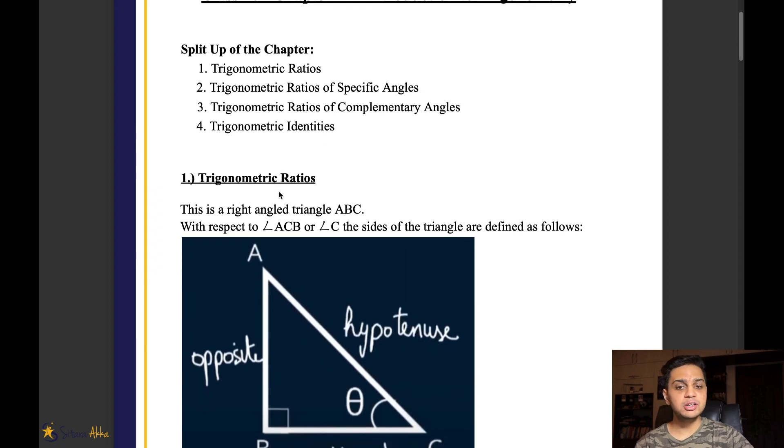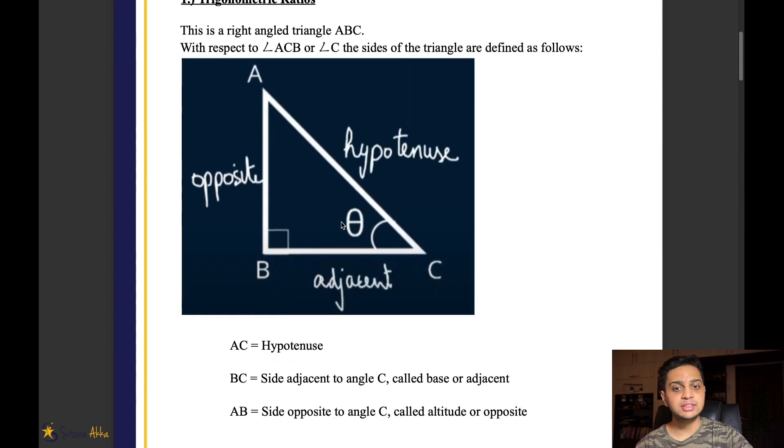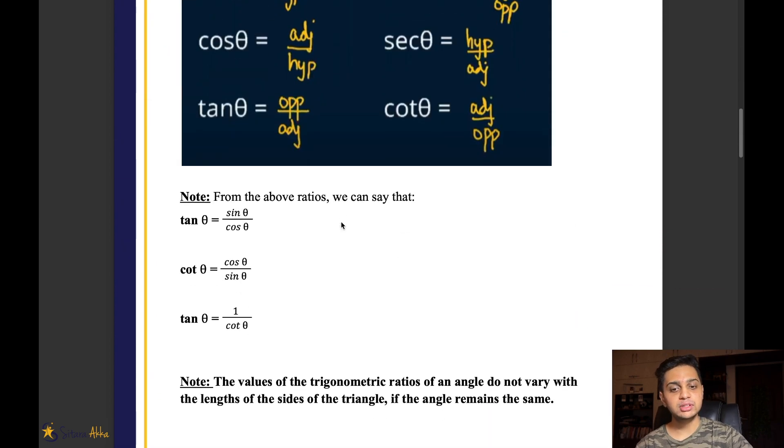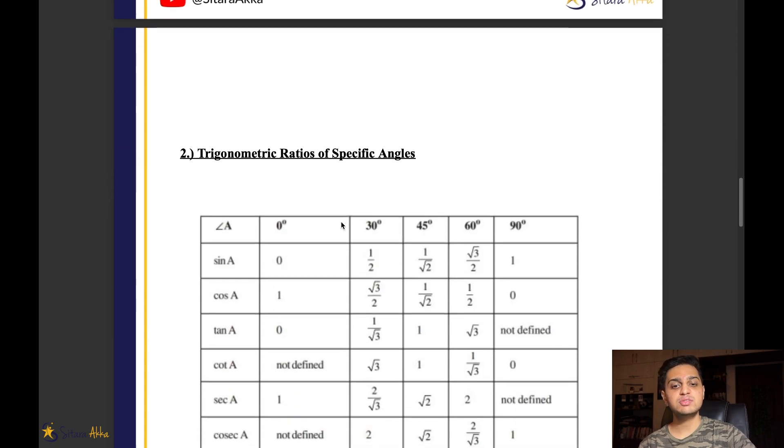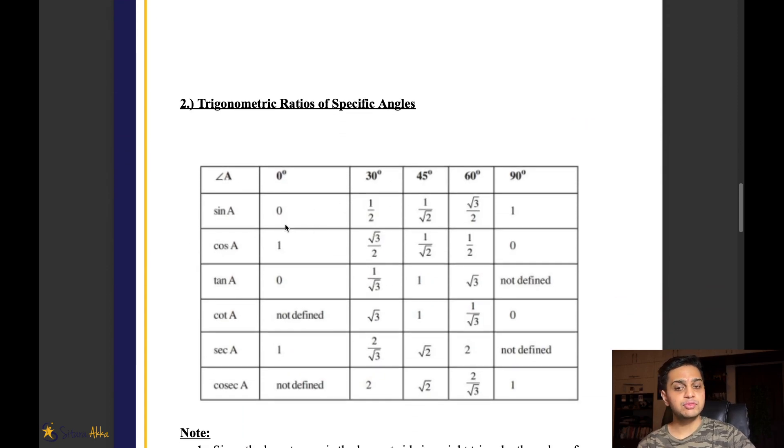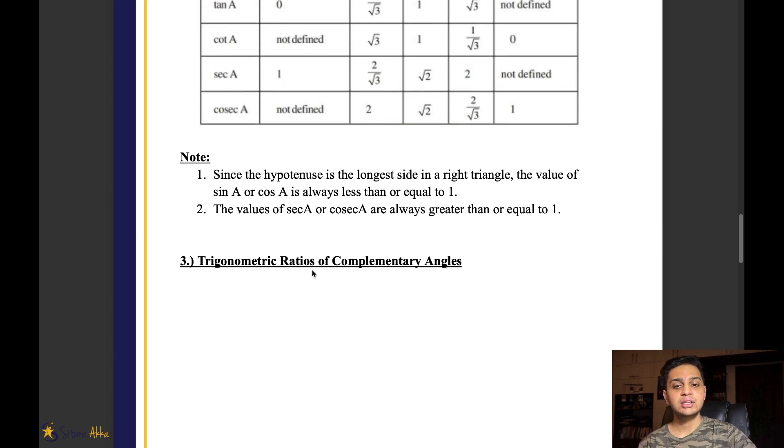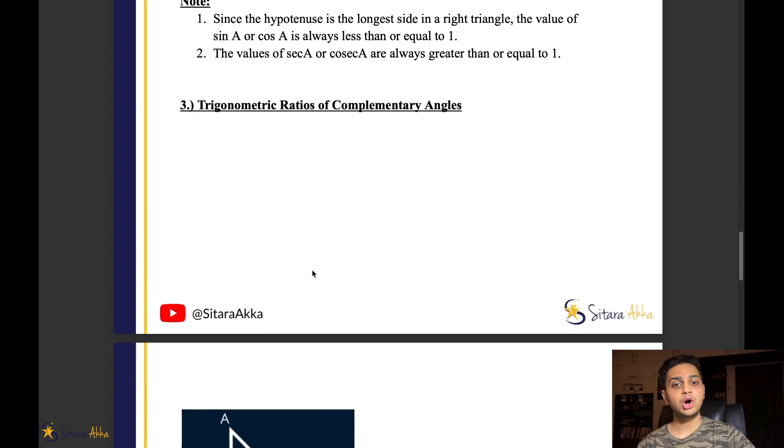In the Trigonometric ratios, we will understand what is sin theta, cos theta, tan theta, and then we will define one. Then we move on to the value of specific angles: sin 45°, cos 60°, tan 45°. Then we move on to the Trigonometric ratios of complementary angles.